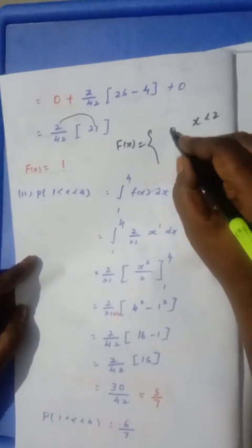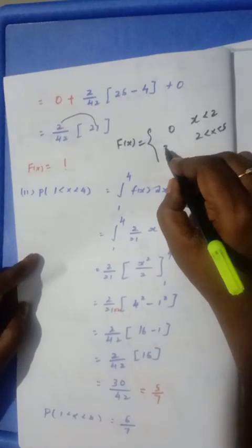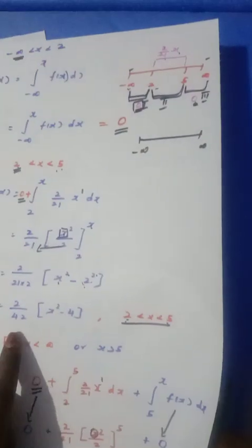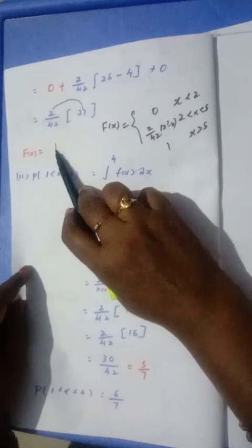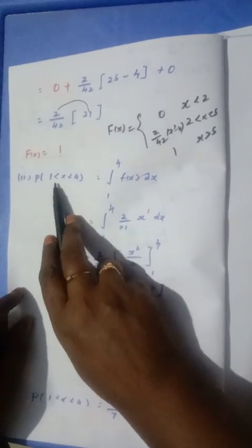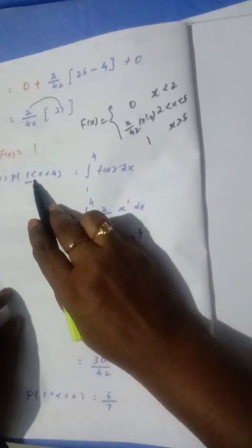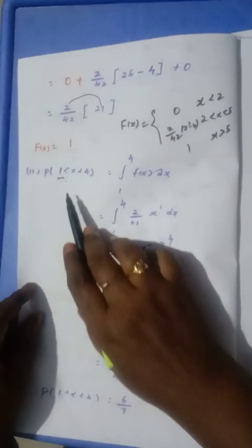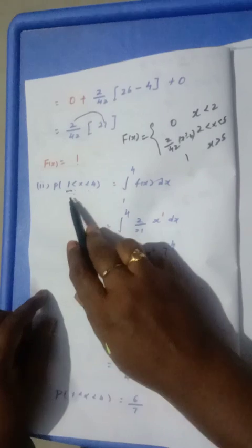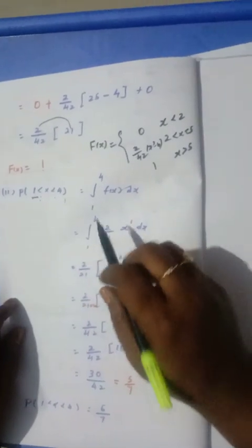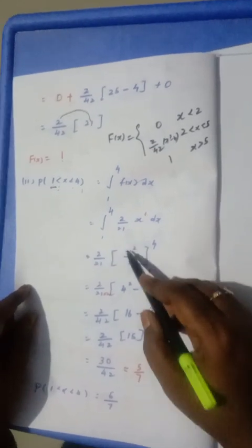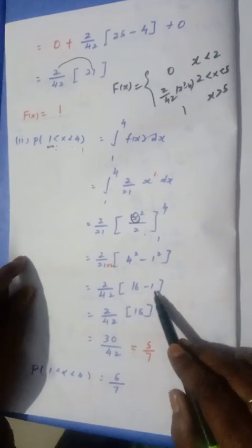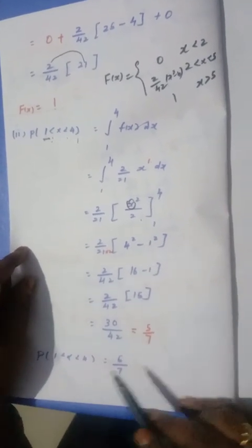If x is less than 2, F(x) is 0. For 2 to 5, F(x) equals (x² minus 4) divided by 21. To find P(1 less than x less than 4): lower limit is 1, upper limit is 4. Using F(x): (2/21) times x squared by 2, with limits 1 to 4. Substituting: 4 squared is 16, lower limit 1 squared is 1, so 16 minus 1 is 15, giving (2/21) times (15/2) equals 15 by 21, which simplifies to 5 by 7. This is the final answer.